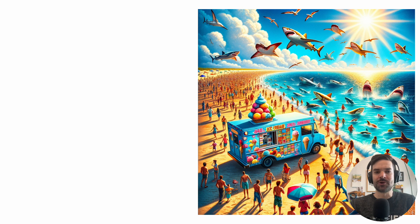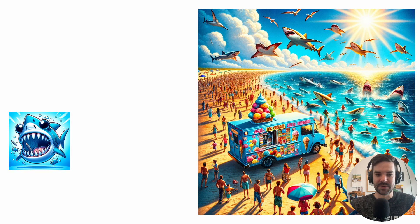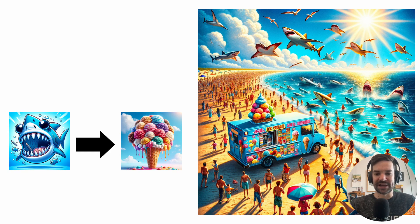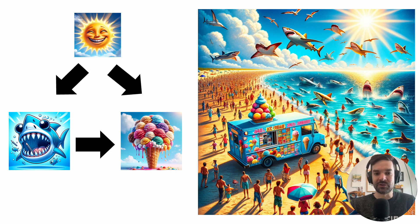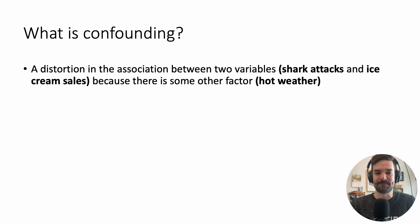Let's have another example. In the summertime, you might notice that there are more shark attacks in the news, and you can also surmise that there are more ice cream sales in the summer. That begs the question: do shark attacks cause ice cream sales? No, of course not. There's a confounder here that's distorting this association, and it's hot weather. Hot weather leads to more shark attacks because there are just more people swimming, and it also leads to more ice cream sales.